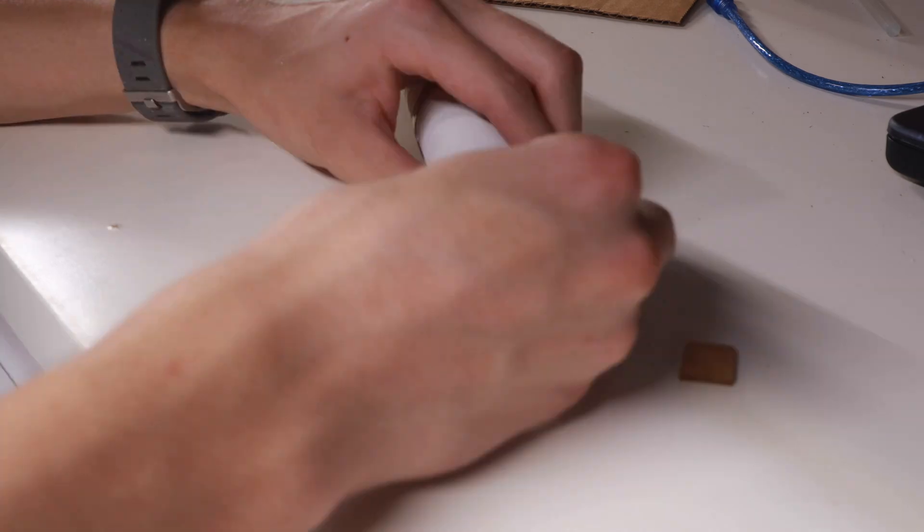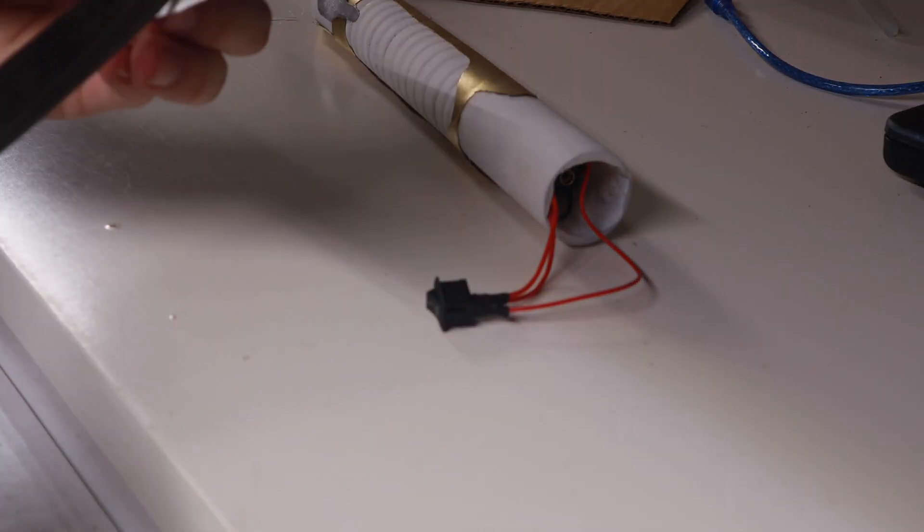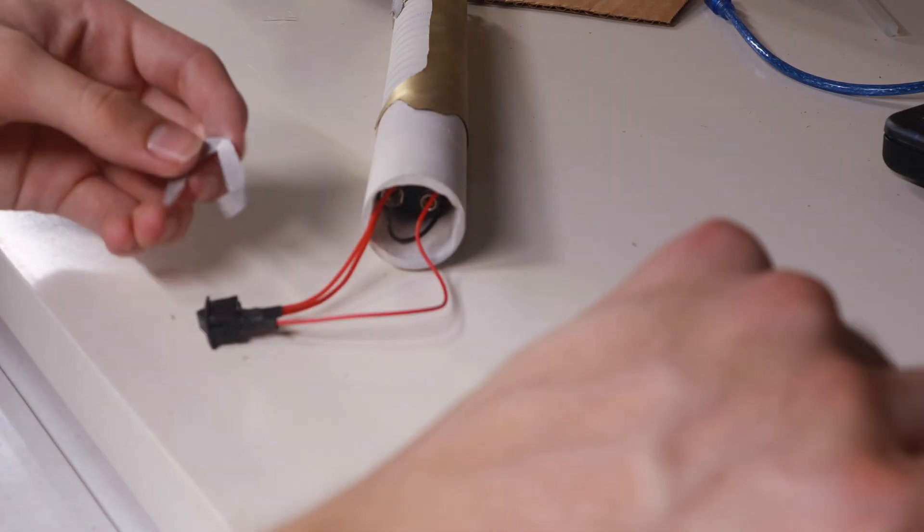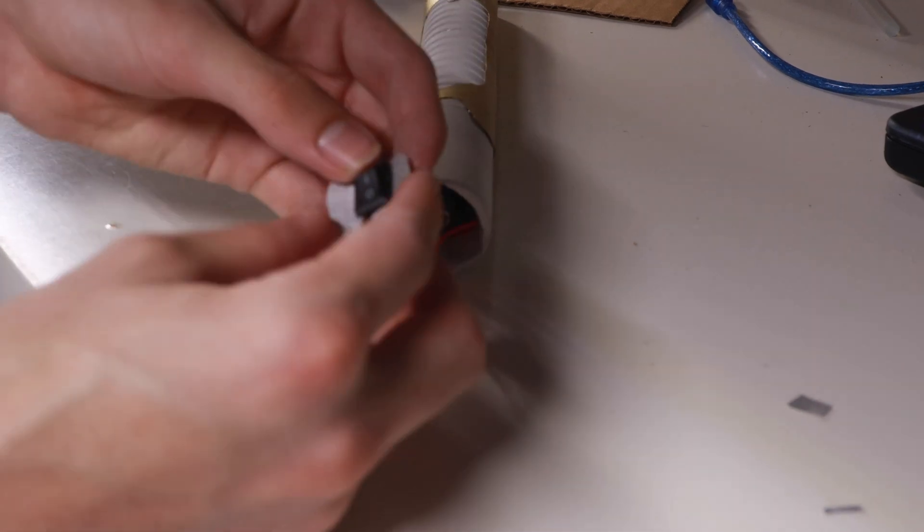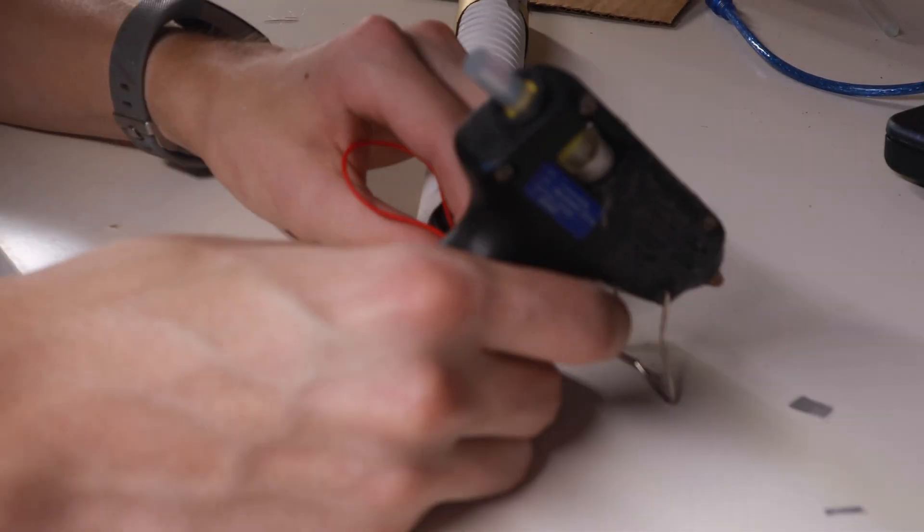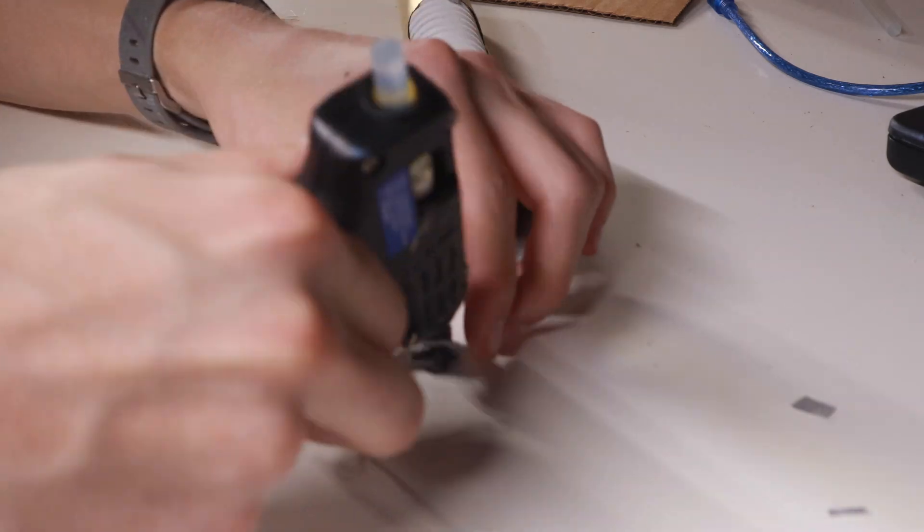We can slide in the 9V battery, and then we can cut a slit and a rectangular hole in the bottom piece for the switch. Once we put the switch in, we can add lots of hot glue to secure it to this little piece and make this little piece strut.